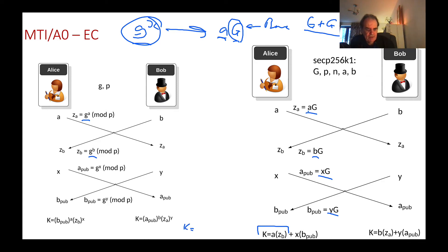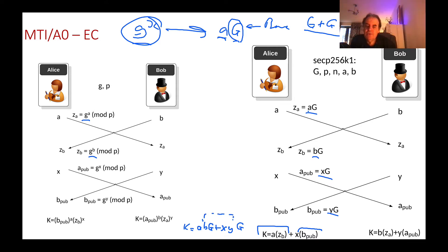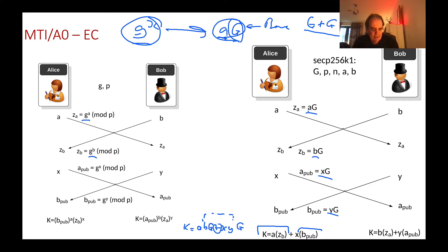So that becomes A times ZA times ZB, which is B times G, plus X, and then this part here is Y times G. This is a point addition which we can do quite efficiently in elliptic curve methods. The two main methods for elliptic curve are a point multiplication and a point addition. In the end both Bob and Alice will end up with AB times G plus XY times G.